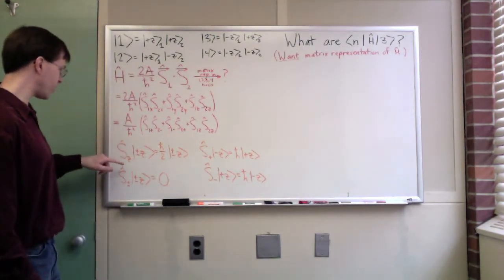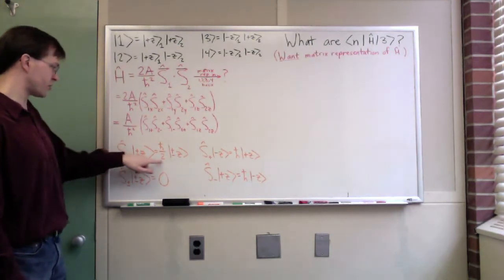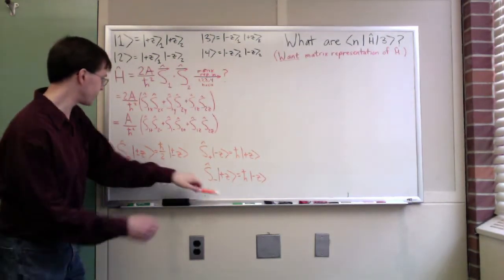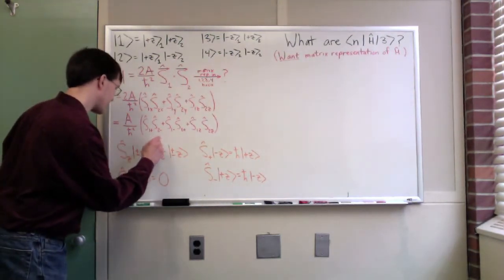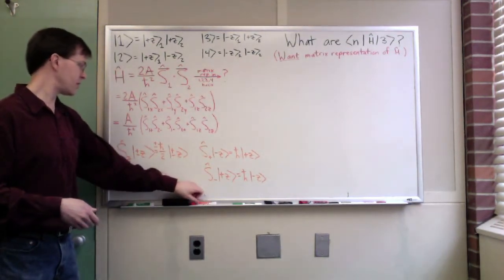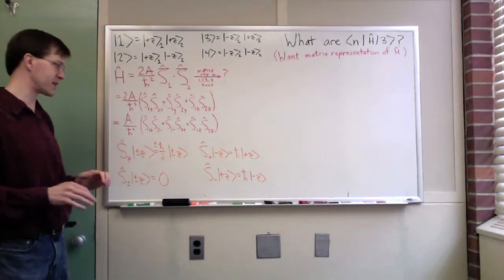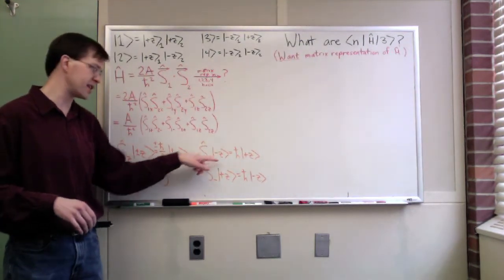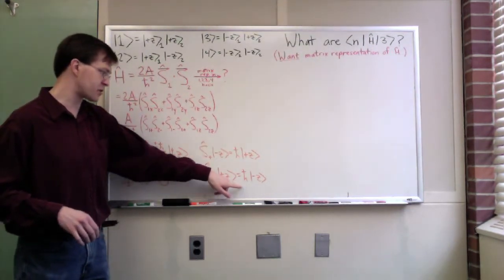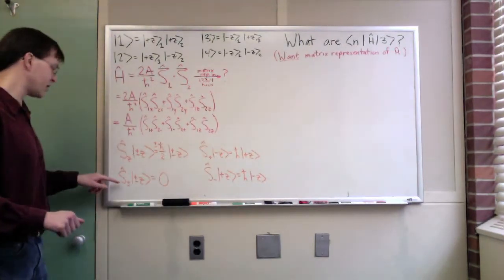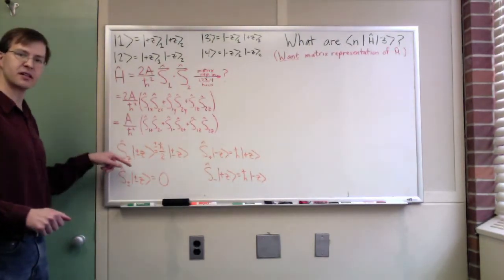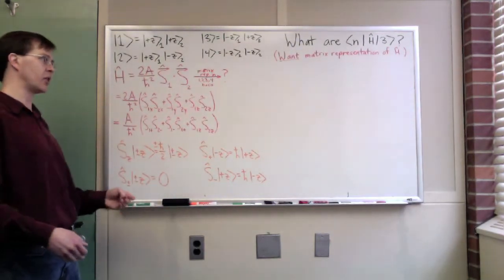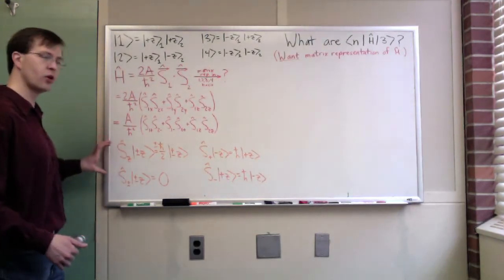The reason we want to do this is that the plus and minus operators and the SZ operators all have really easy, straightforward actions on our plus or minus z states. I can review those down here. Remember that the SZ operator acting on plus and minus z are the eigenstates of the z component of spin, so it's plus or minus h-bar over 2 times plus or minus z. We know that the raising operator applied to minus z gives us h-bar times plus z. The lowering operator applied to plus z gives us h-bar times minus z. Trying to raise the plus z state gives you zero. Trying to lower the minus z state gives you zero. This is just a review of how these things work.